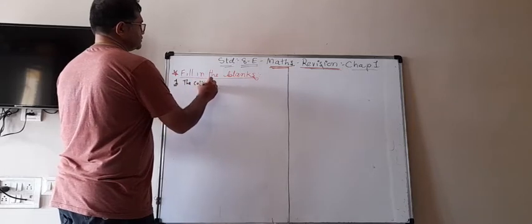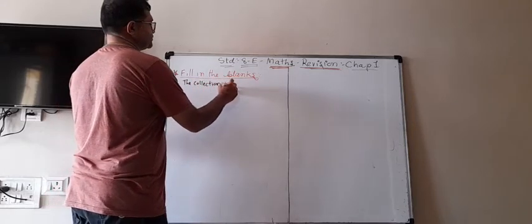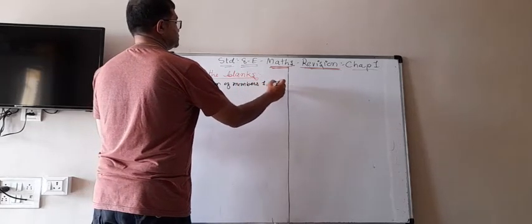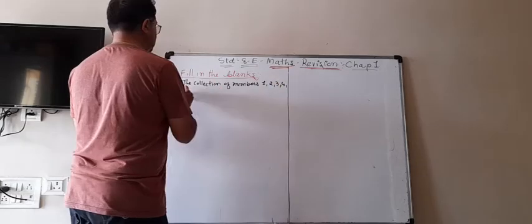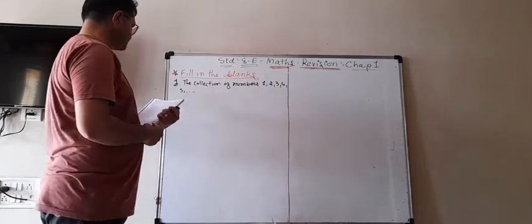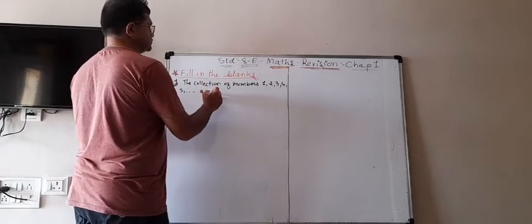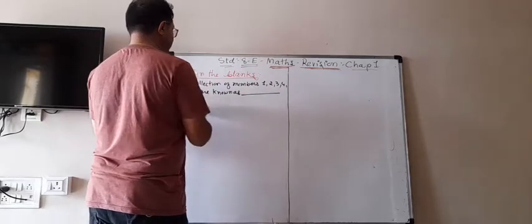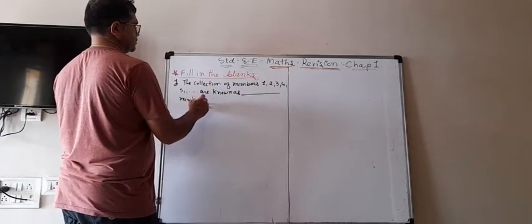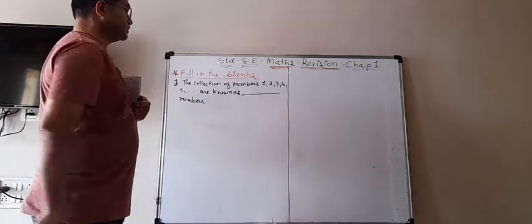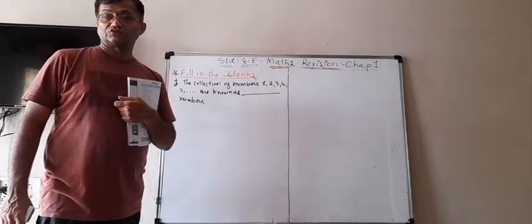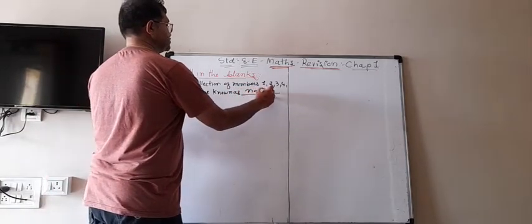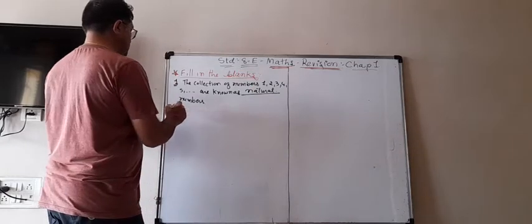The collection of numbers 1, 2, 3, 4, 5, dot dot dot are known as blank numbers. We know that these are the numbers which are the natural numbers. So the answer is: natural numbers. Second: